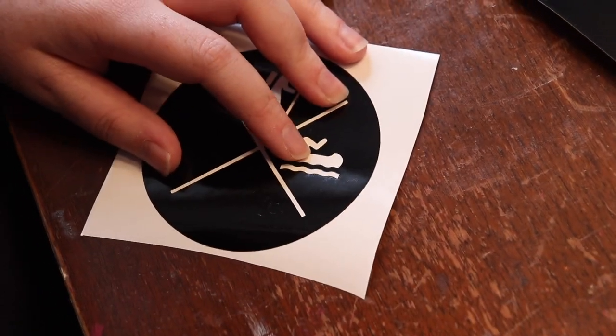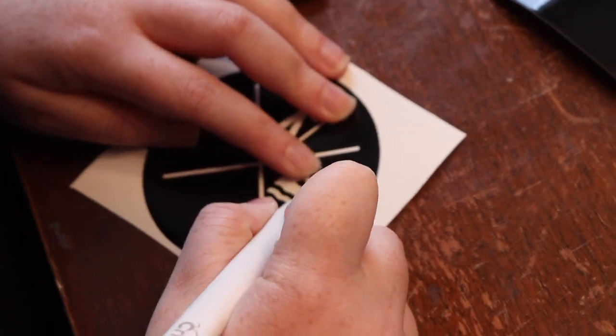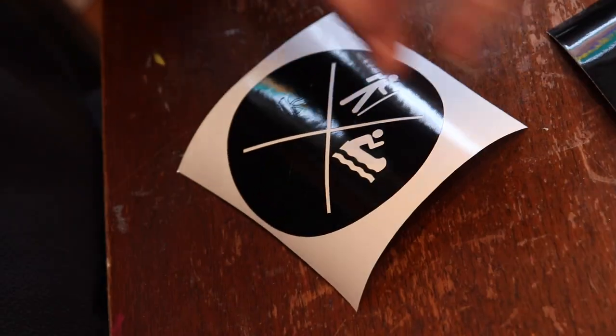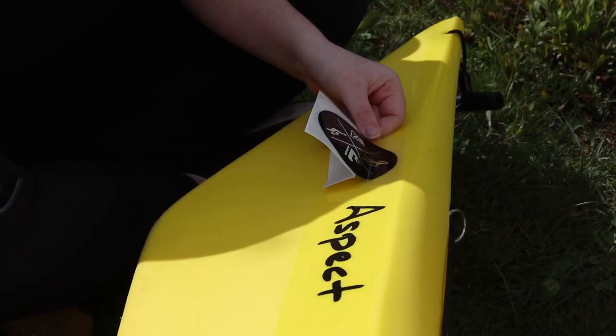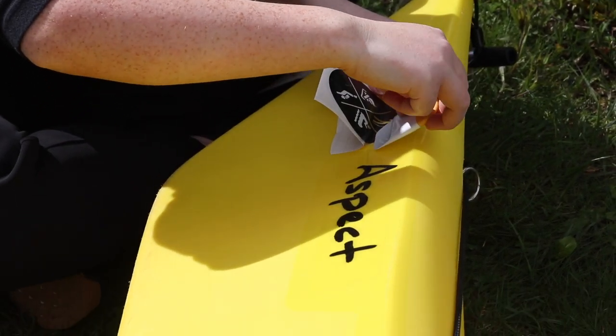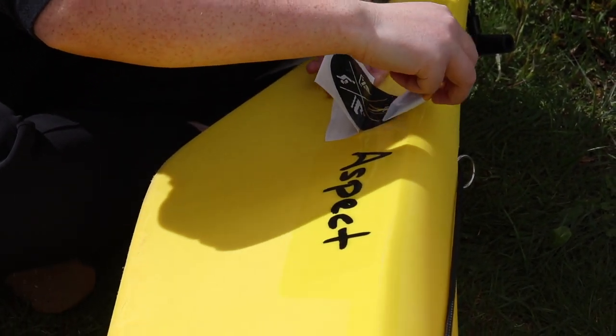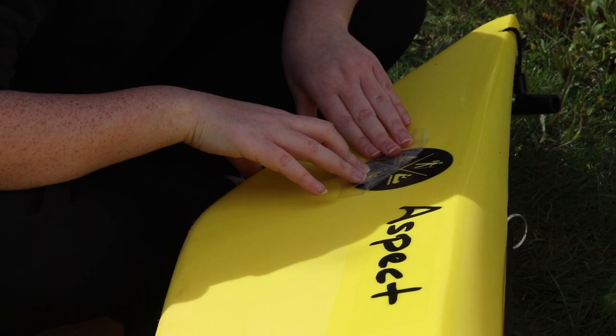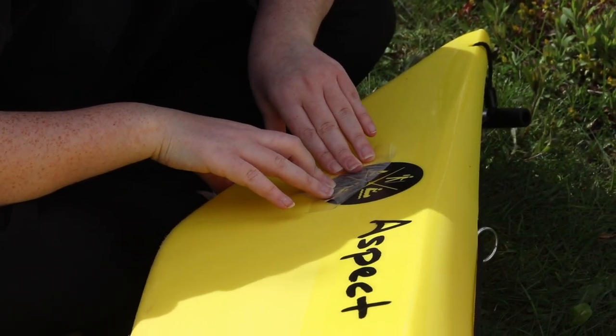Here I am weeding the sticker, which basically means I'm just taking out the parts that we're not going to need. And here's the application process, and I'm just removing the transfer tape now.